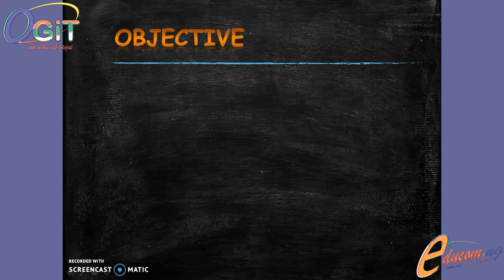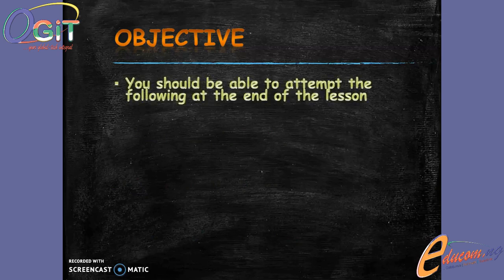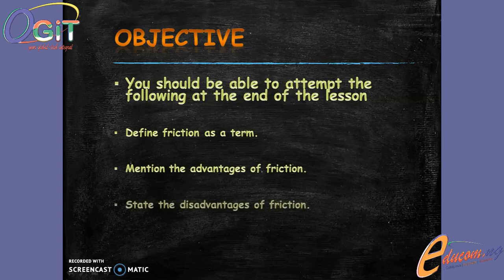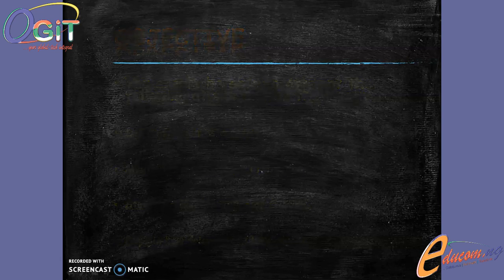With this said, the next thing we'll be looking at is the objective of this class — what do we aim to achieve. At the end of this class you should be able to: define friction as a term, mention the advantages of friction, state the disadvantages of friction, and lastly explain how friction can be reduced.